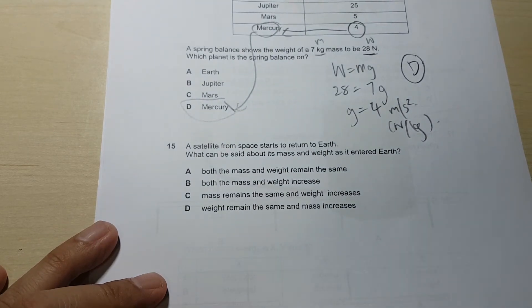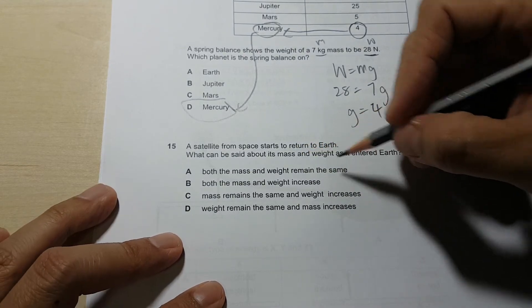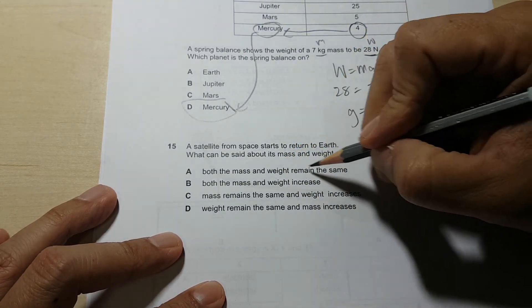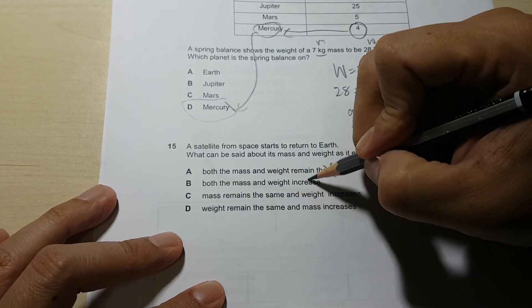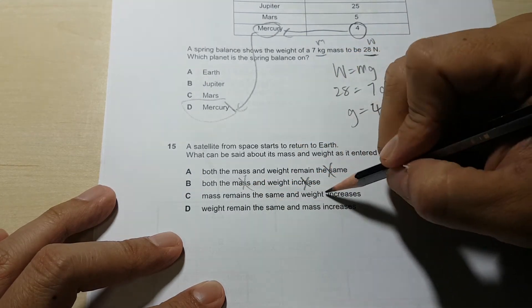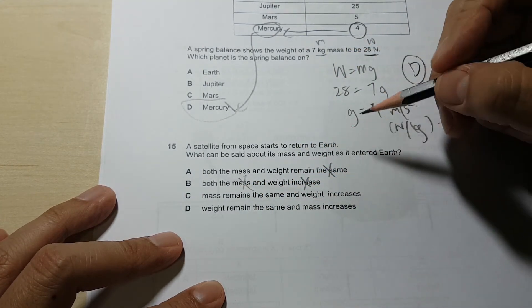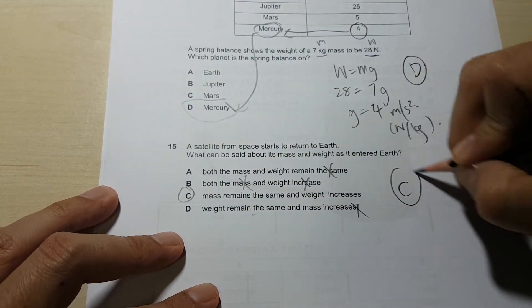Question 15. The satellite returns to Earth. What can be said about mass? Mass will always be the same, but weight changes. So weight doesn't remain the same. Both cannot because mass cannot remain the same. Mass must remain the same and weight increases because it enters Earth. So answer C. Weight cannot remain the same.